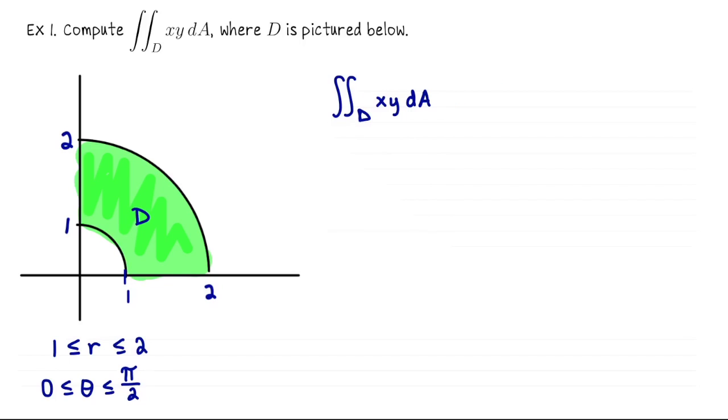The double integral we're looking for can now be written as the integral from 1 to 2, so here I'm putting the r bounds on the outside. The integral from 0 to π/2, that's for theta. And then xy in polar coordinates is r cosine θ times r sine θ. Then I'm going to replace dA with r dθ dr. So here I put theta on the inside and r on the outside so I order the differentials to match the bounds.